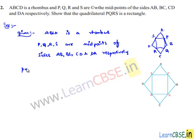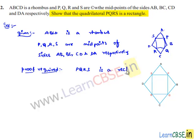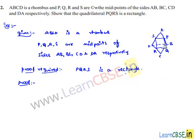We need to prove that PQRS is a rectangle. In order to prove this, let us follow a procedure. In the first step, let us join BD and AC.